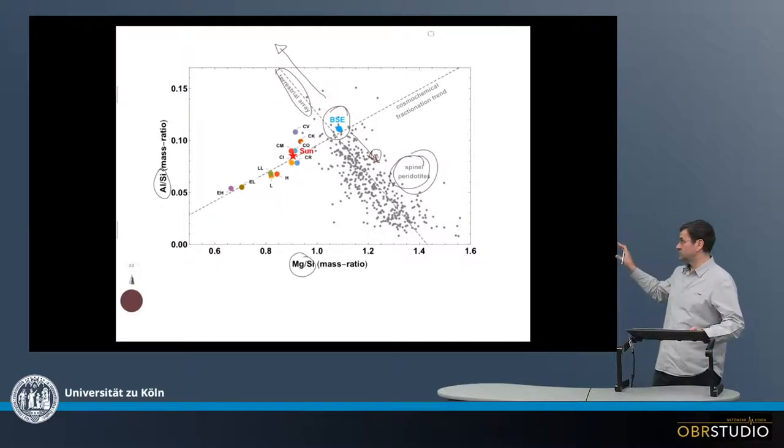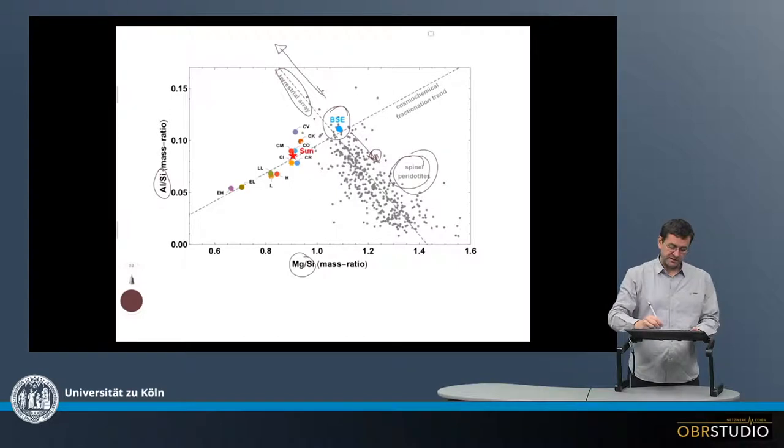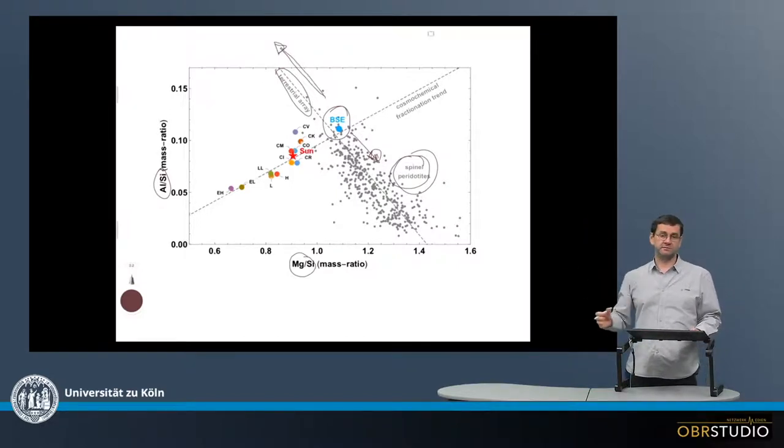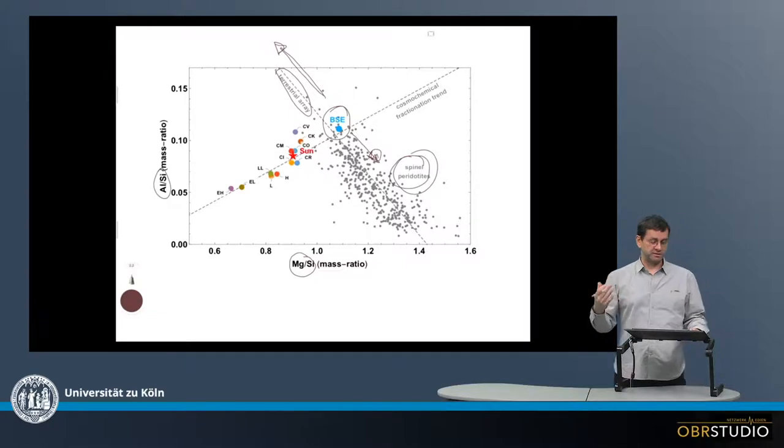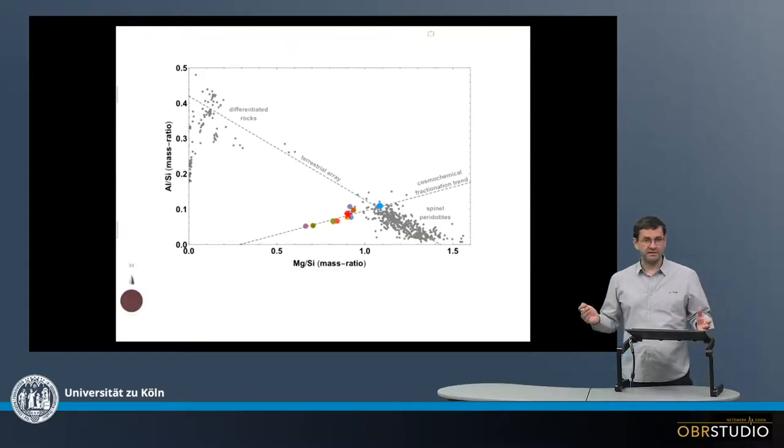Now this plot is usually shown in this way, but it would be really interesting whether the extension here of the terrestrial array really arrives at the differentiated material. And therefore I produced a second plot here, in which I made this kind of extension.